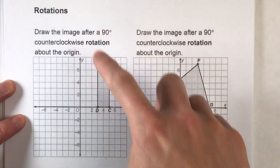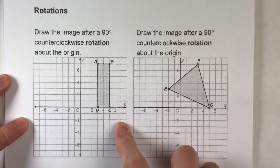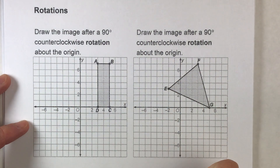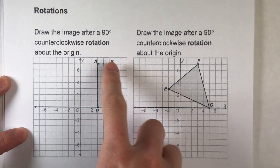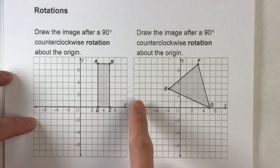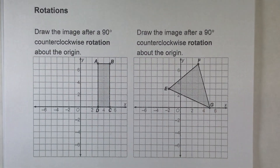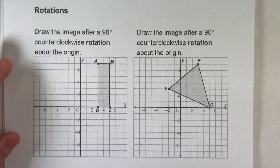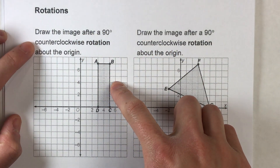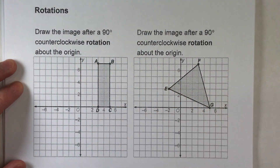So today we are drawing rotations. Now of all the transformations, rotations tend to be the hardest one for most of my students. In a rotation, what you have to do is imagine everything on this coordinate plane just turning. For example, it says draw the image after a 90-degree counterclockwise rotation about the origin.